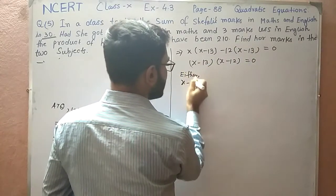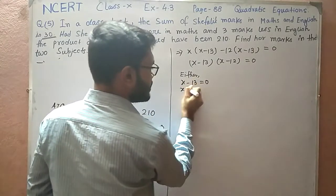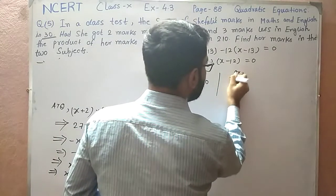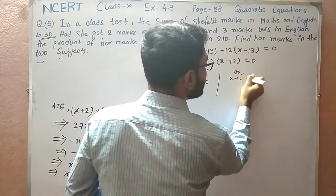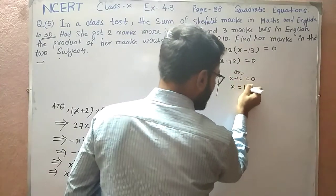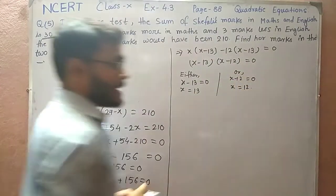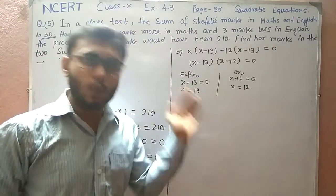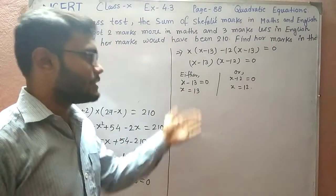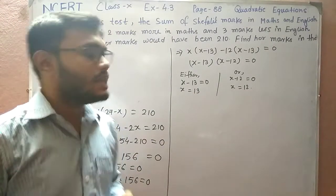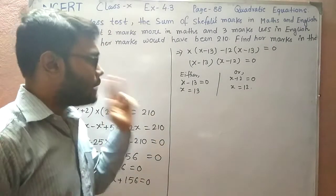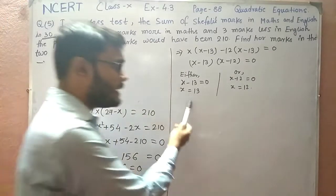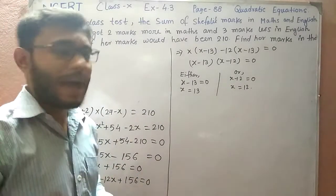Either x minus 13 equals 0, which means x equals 13, or x minus 12 equals 0, which means x equals 12. Both are acceptable because both are positive numbers and can represent marks. So the marks in Maths are either 13 or 12.